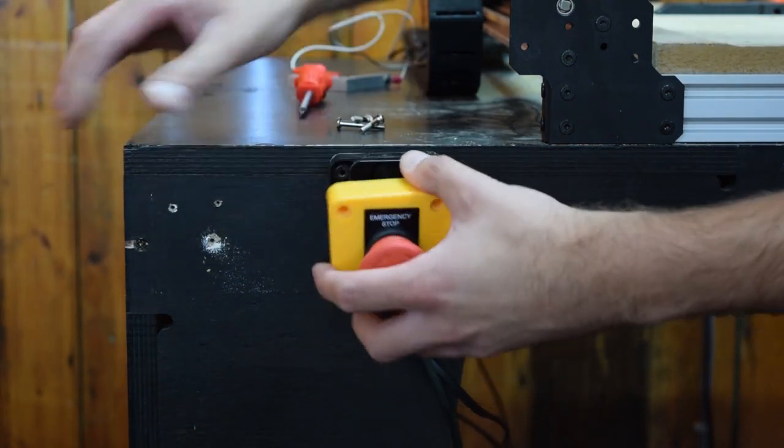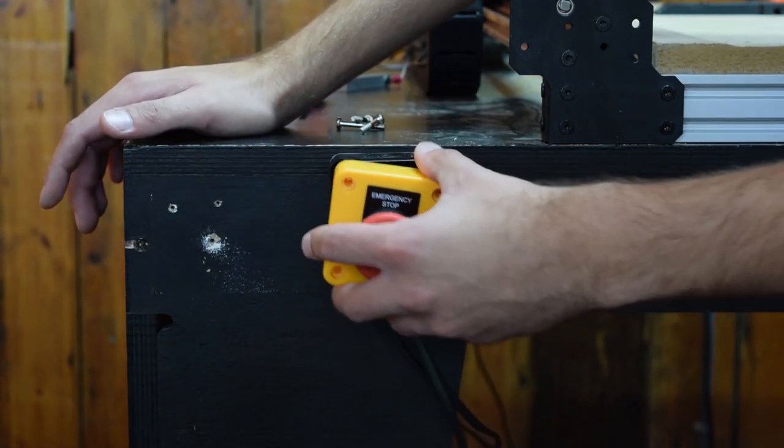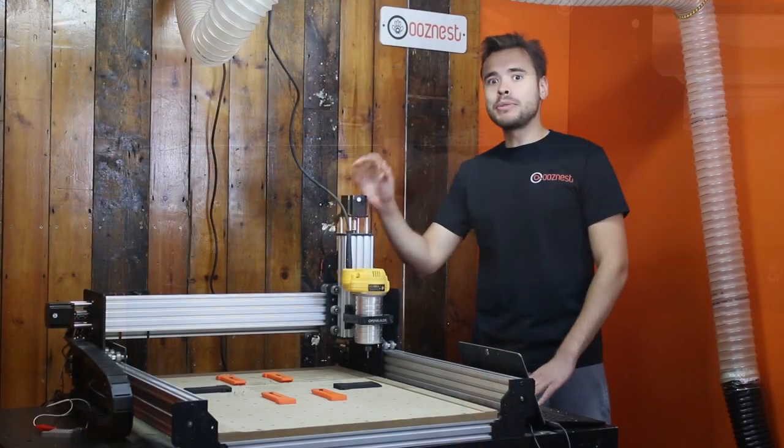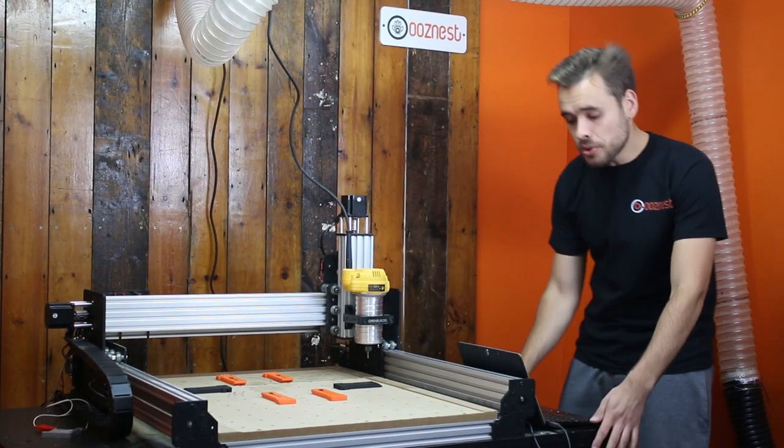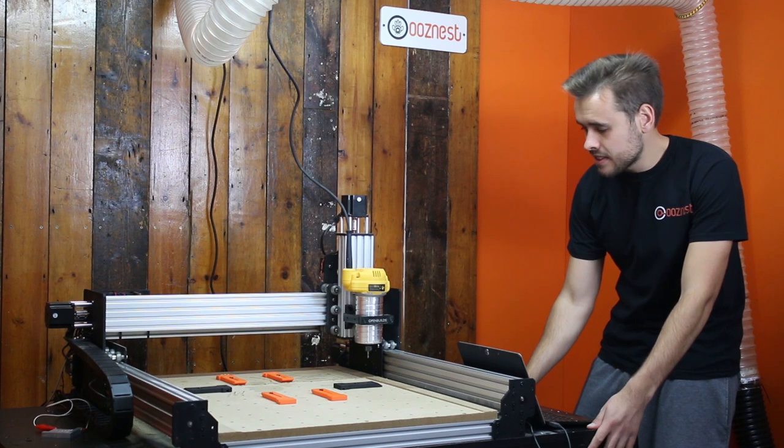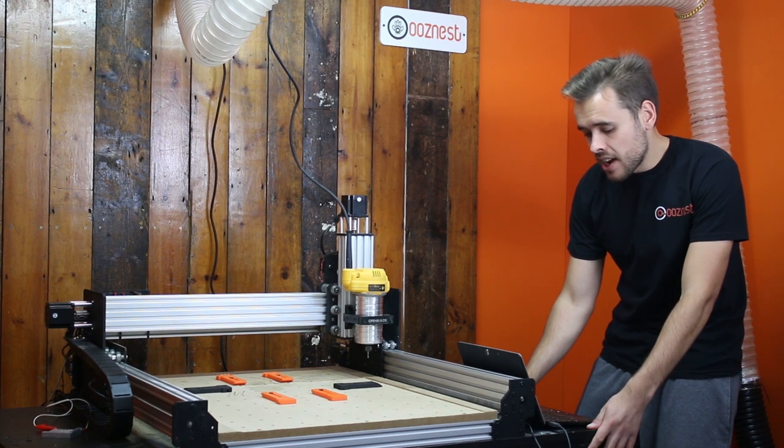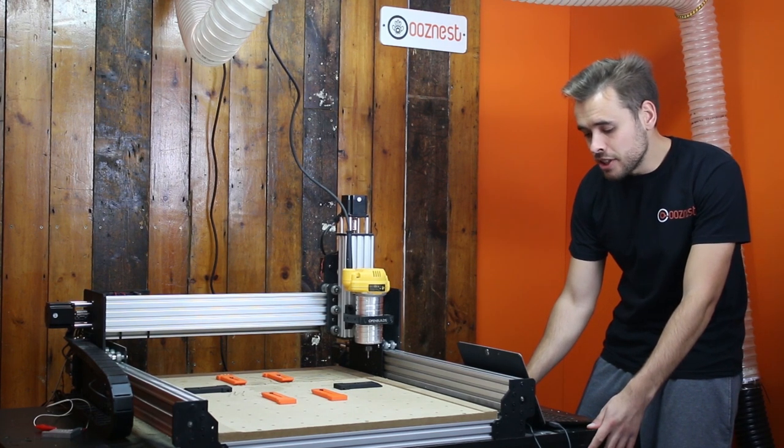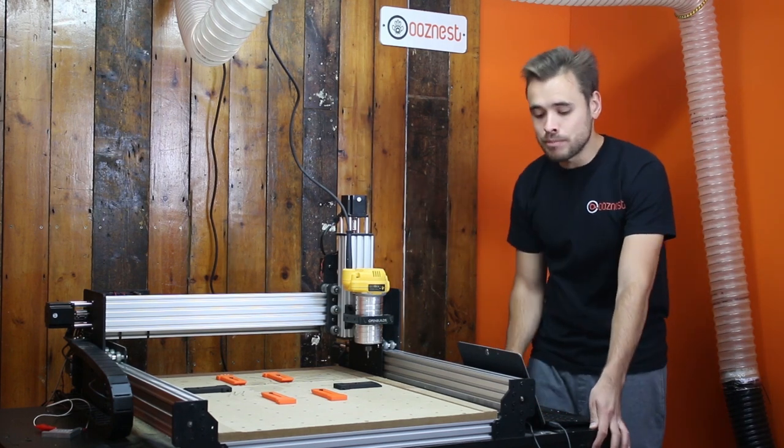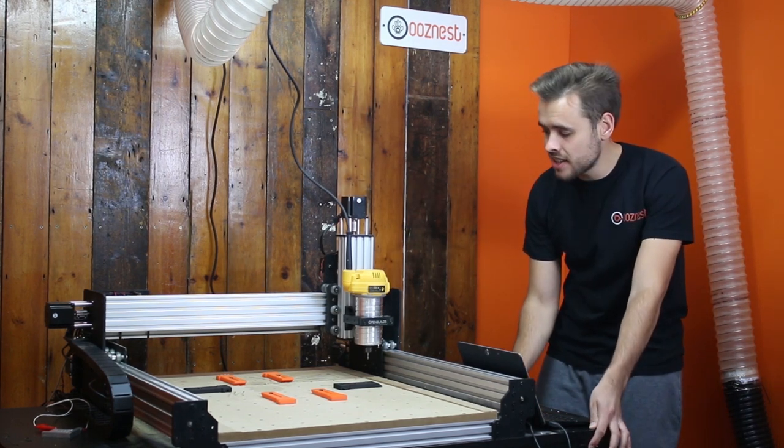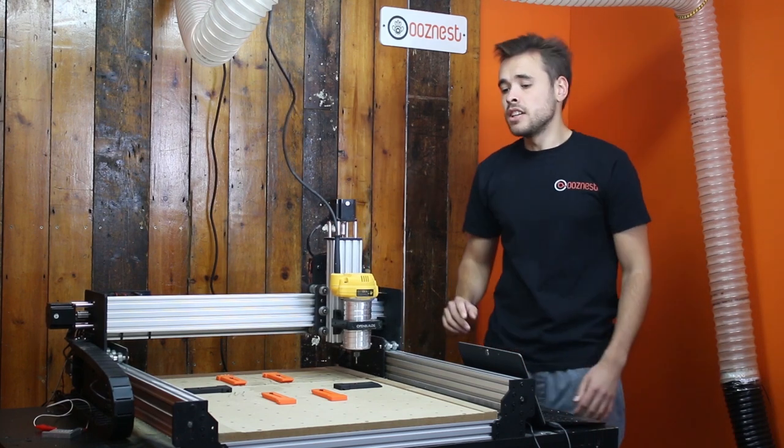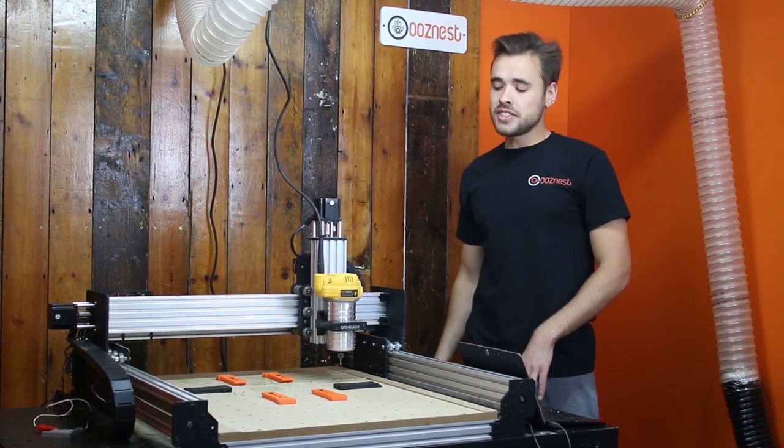So I'm just going to put this back now and then give you a demo of it in action. I've got the machine turned on. I'm just going to quickly home it. And now I can quickly run a file to give you a demo of how this emergency stop line works. So just send that. So it's going to let it run for half a second.